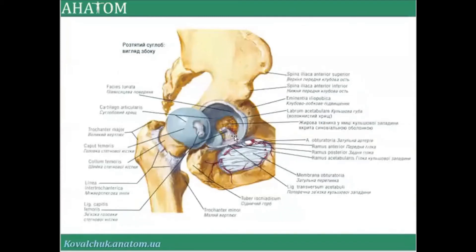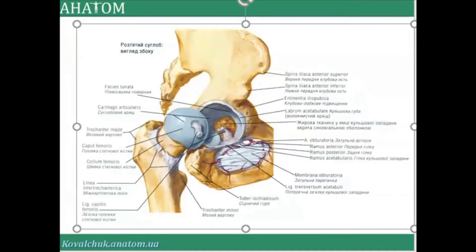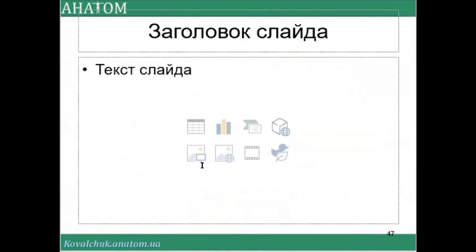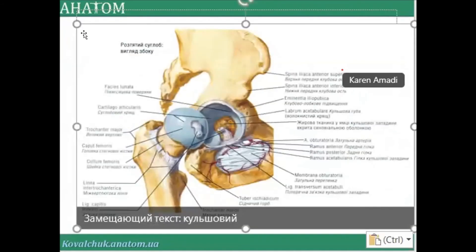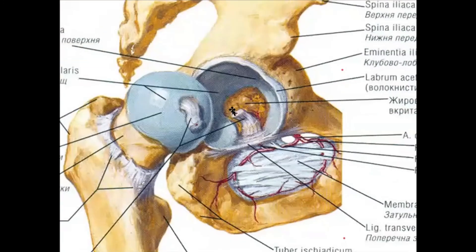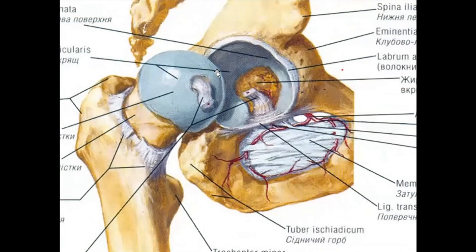The ligament of the head of the femur contains a small artery — visible in red — that provides vascularization to the head of the femur bone. It is very dangerous to crush this ligament, as a large blood vessel is located within the capsule of this ligament.